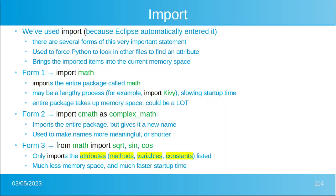Not to mention, entire packages take up a ton of memory space, and some of these packages are huge. If memory is at a premium — like in a tiny microprocessor — this could really be an issue. Form number two: you can import and then give it a new name. Maybe you don't like the word cmath, or maybe cmath has been updated to cmath 2. In any case, you can say import cmath as and then give it a new name — it imports the entire package but gives it a new name.